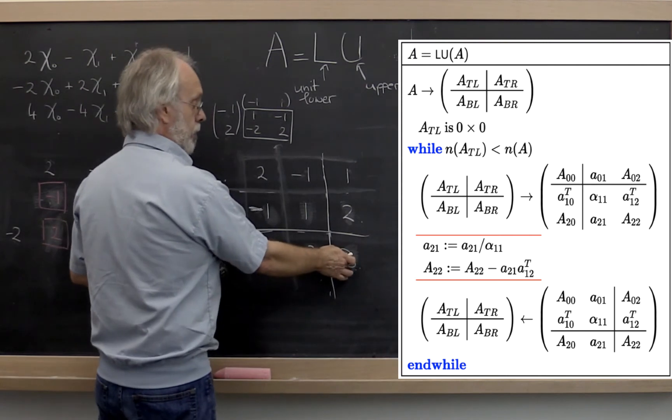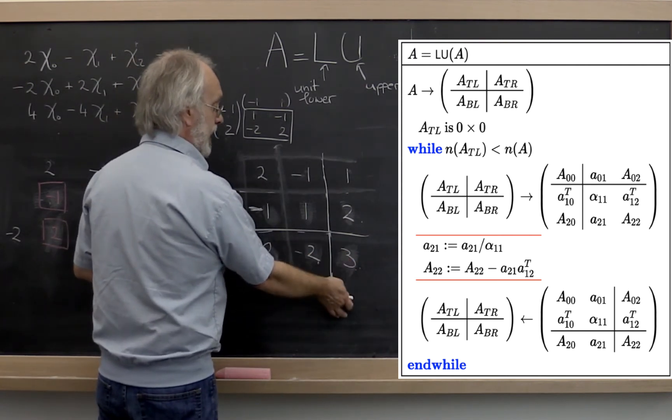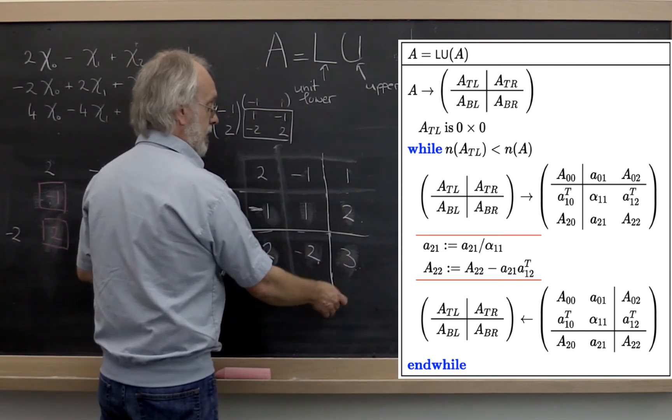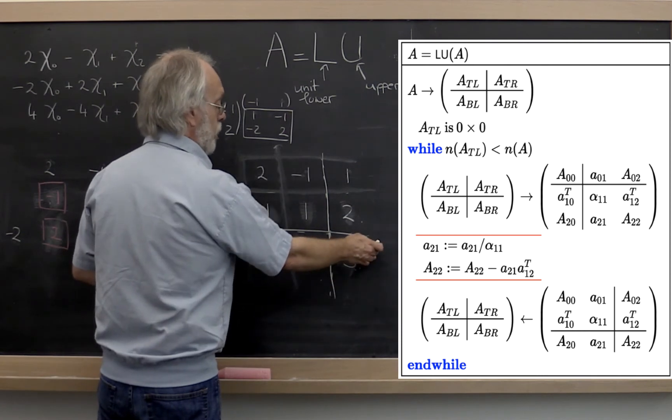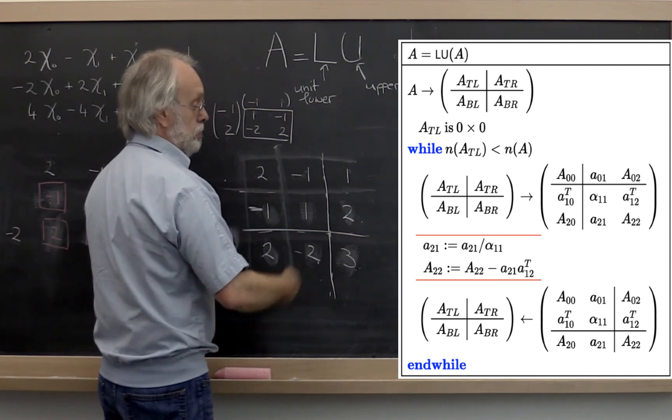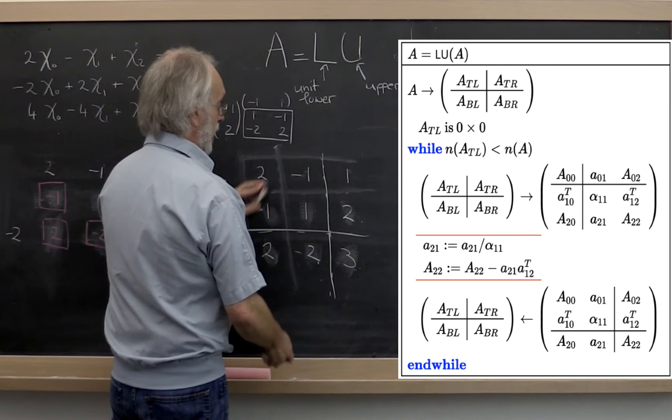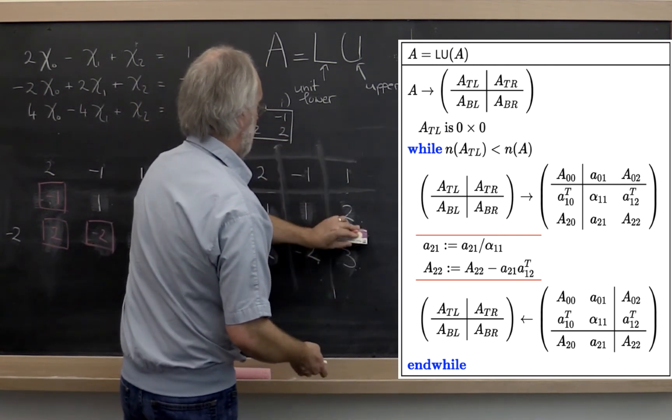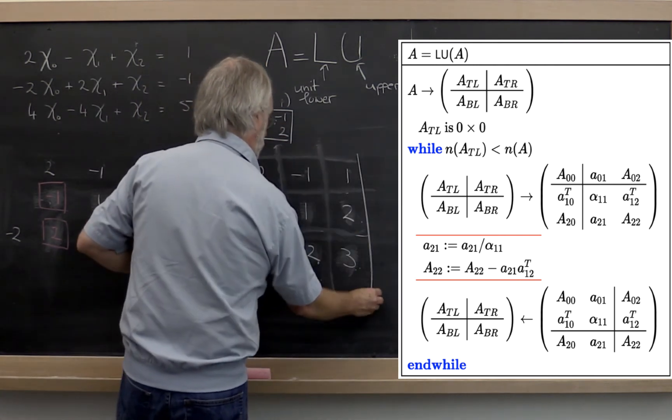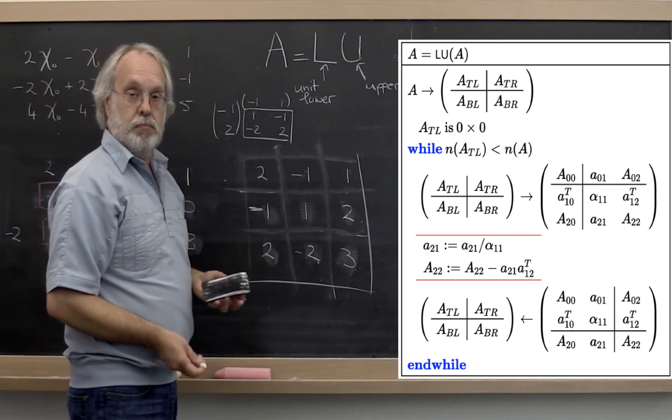Then it tells you that this is alpha 1,1. Now you have to divide that into A 2,1, but there's nothing there. And then you need to do A 2,1 times A 1,2 transpose to update the A 2,2, but there's nothing there either. So nothing happens and then one last time you move forward and your algorithm is done.